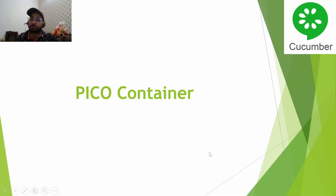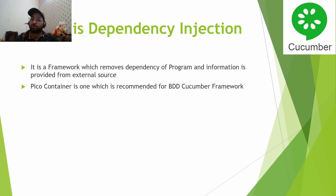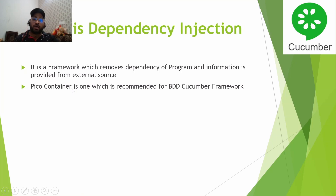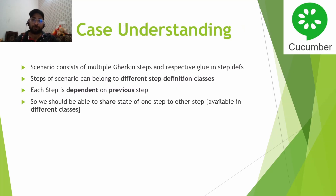Welcome back to Prince Automation Destination. Today we are going to talk about a very important concept of Cucumber — PicoContainer — which is used to share the state between Cucumber steps. PicoContainer is one form of dependency injection. Dependency injection is a framework used to remove the dependency of a program, and that dependent information is shared using an external source. PicoContainer is the one recommended by the Cucumber community itself.